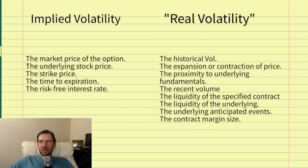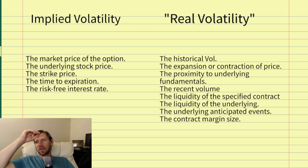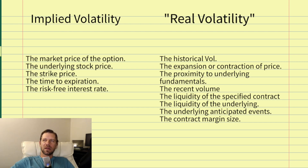Implied volatility takes these factors into account: the market price of the option, the underlying stock price, the strike price, the time to expiration, and the risk-free interest rate. The risk-free interest rate, for those who may not know, is basically the government debt rate.